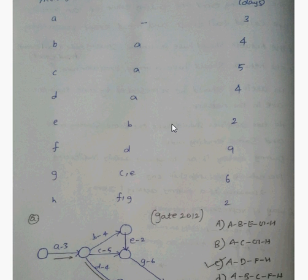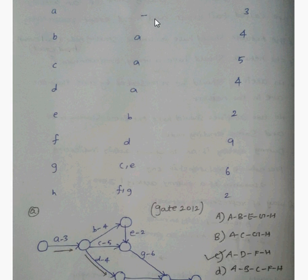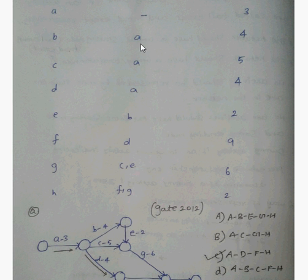First, activity A is the start, and its duration is 3. Then A is complete, and B starts with duration 4. Then A is complete, and D has duration 4. Then A is complete, and C has duration 5.